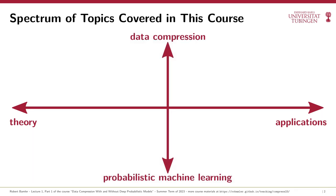Second, there's been a new development in the field of data compression. A new class of compression methods now use probabilistic machine learning models and deep neural networks, and these new methods are starting to outperform many of the classical compression methods for images, videos, and other data types. So in addition to information theory, this course will also teach you how to design and train probabilistic machine learning models, and how you can use such a trained model for data compression.